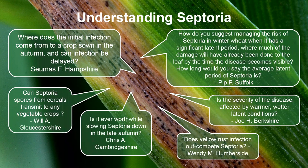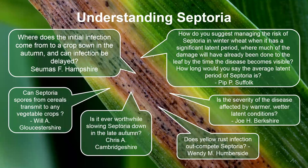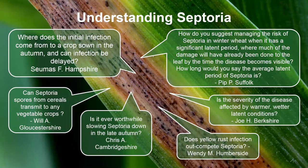Question two from Will in Gloucestershire: can septoria spores from cereals transmit to any vegetable crops? Septoria is an issue in crops such as celery and it also infects other arable crops such as linseed, but these are usually different species. My gut feeling is no, it doesn't transmit across, but we'll check that out and include the answer in the mail-around.